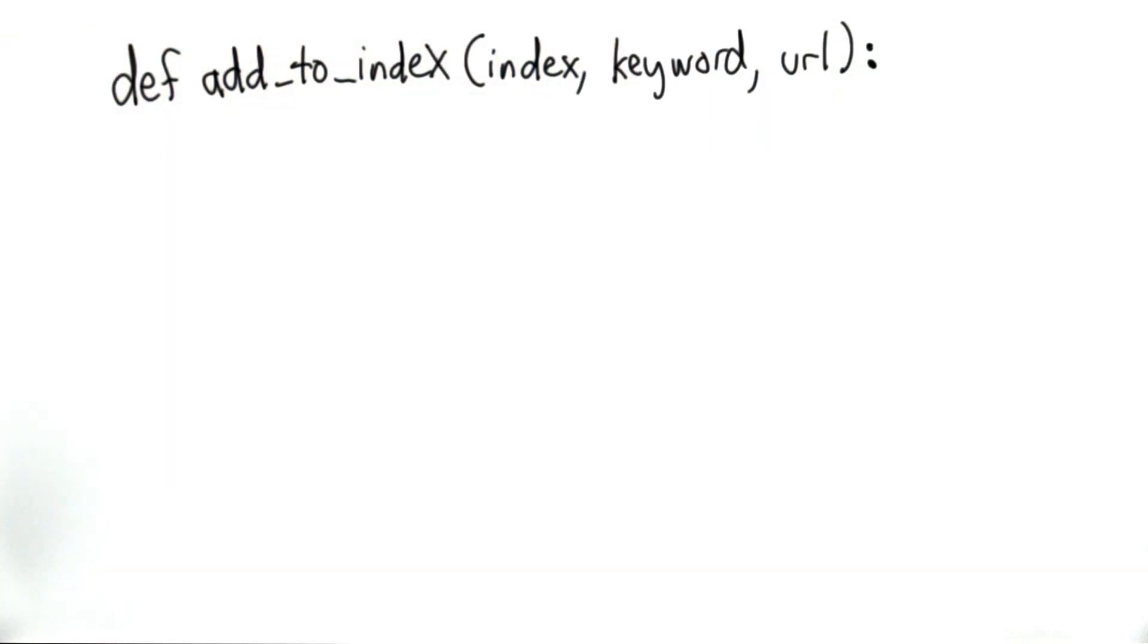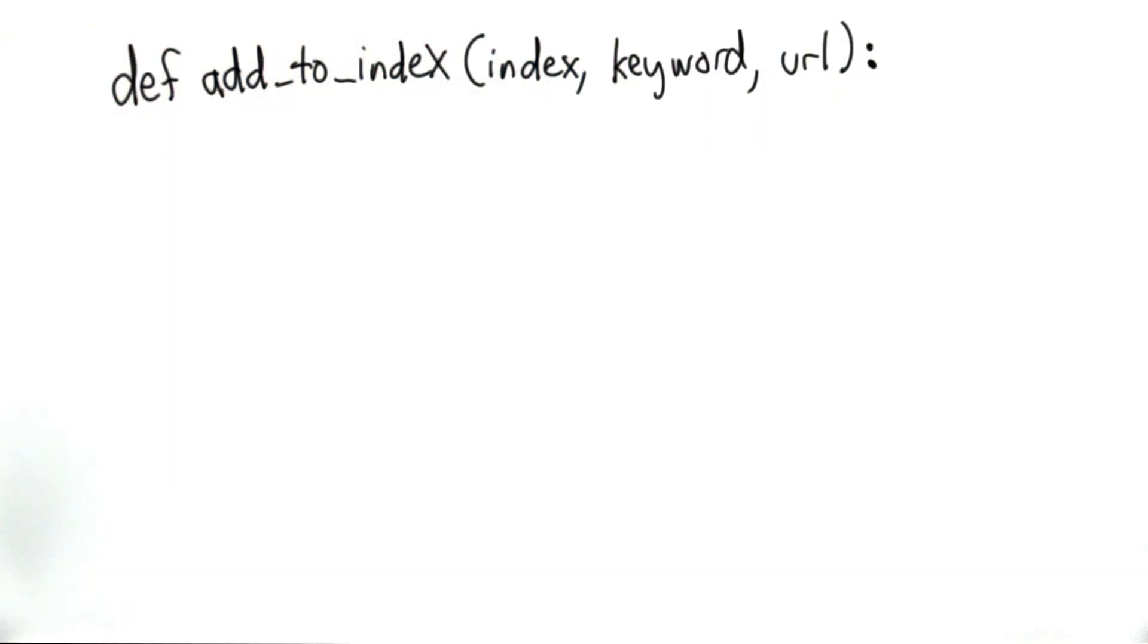What we need to do in addToIndex is first find if the keyword already appears. To do that, we need to look through all the entries in index. The natural way to do that is to use a for loop.